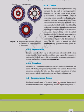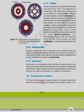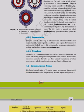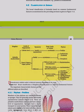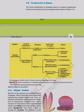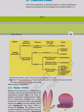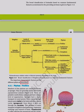The broad classification of Animalia based on common fundamental features is summarized in figure 4.4. The important characteristic features of the different phyla are described in section 4.2.